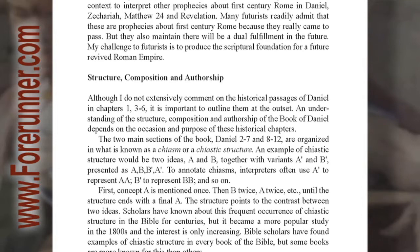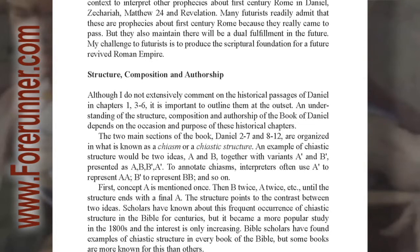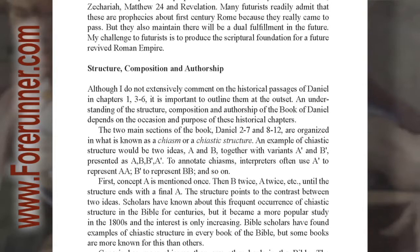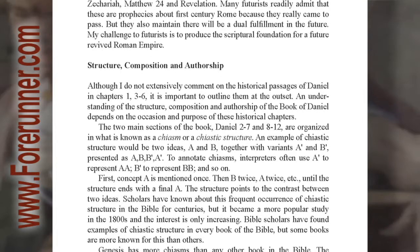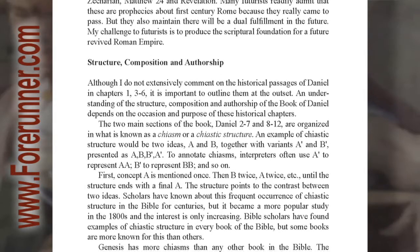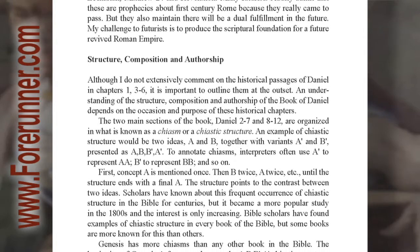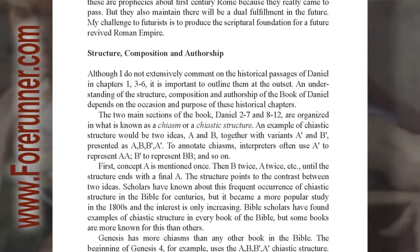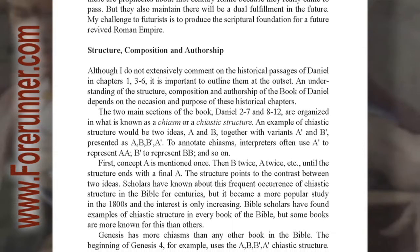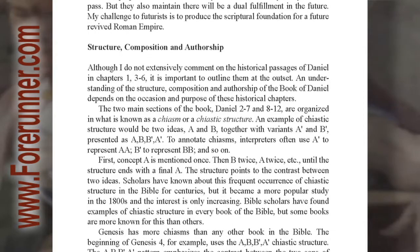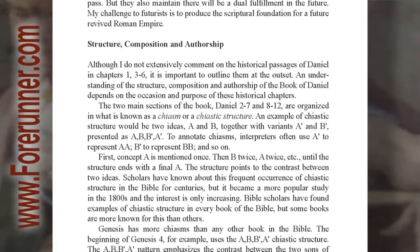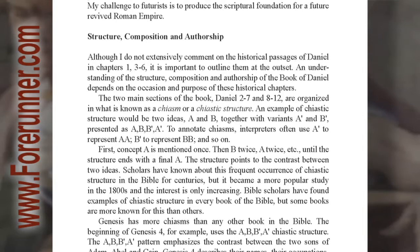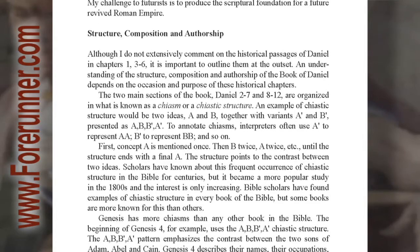Although I do not extensively comment on the historical passages of Daniel in chapters 1 and 3-6, it is important to outline them at the outset. An understanding of the structure, composition, and authorship of the Book of Daniel depends on the occasion and the purpose of these historical chapters. The two main sections of the Book — Daniel 2-7 and 8-12 — are organized in what is known as a chiasm, or a chiastic structure.